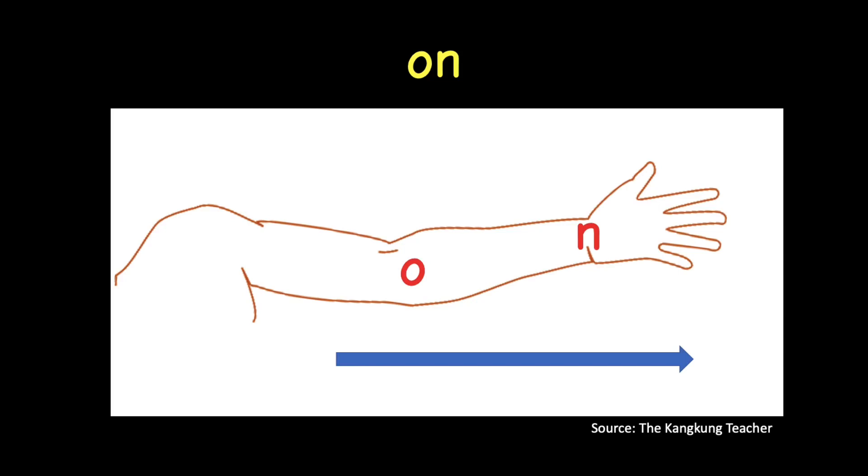Let's try another word. We have N, O, T. How do we read this word? Put the first sound on your shoulder. This is N. The second sound is O. O. The third sound is T. N, O, T. N, O, T.